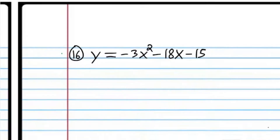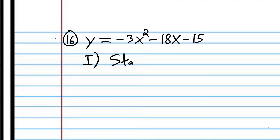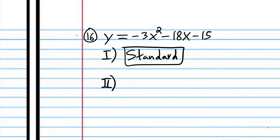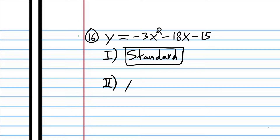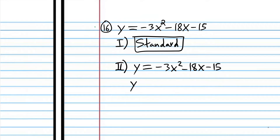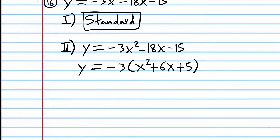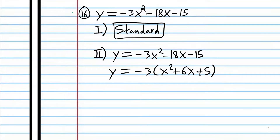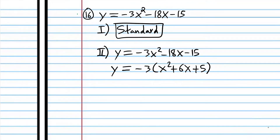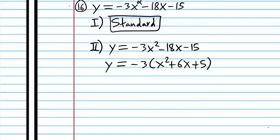We're back. Let's first identify the form — this is standard form. Then we're going to convert to intercept form by factoring out a GCF, a greatest common factor. You may not always be able to factor out a GCF, but in these particular problems you will be able to.